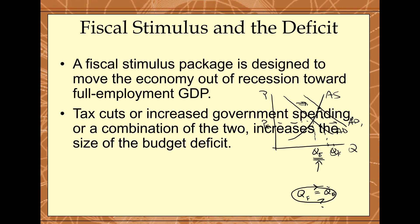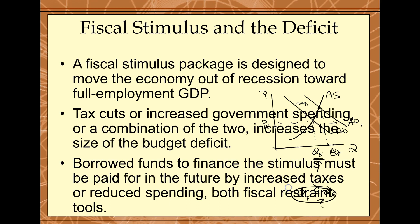Tax cuts or increased government spending — that's fiscal stimulus — can shift the aggregate demand curve to the right. But this also requires an increase in debt, and borrowed funds to finance the stimulus must be paid back. One way to look at it is: if we're stimulating the economy today through borrowing, that may require in the future that economic activity decrease, because that's when you have to pay off your debt. There's that saying, 'you rob Peter to pay Paul' — you do something short term and you eventually pay for it later on.